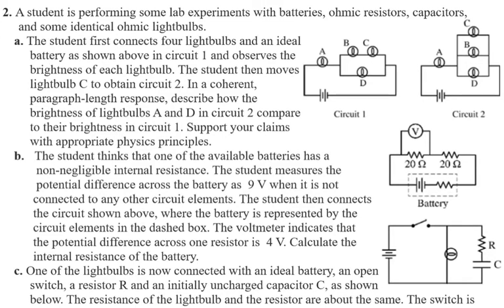This is one of the FRQ questions from College Board — the ones they give you in quizzes to study. I also have these questions in the quizzes on College Board for you to practice. The question says: a student is performing a lab experiment with batteries, ohmic resistors, capacitors, and some identical ohmic light bulbs. The student first connects four light bulbs and an ideal battery as shown in circuit one and observes the brightness of each bulb. The student then moves bulb C to obtain circuit two. In a coherent paragraph-length response, describe how the brightness of light bulbs A and D in circuit two compare to their brightness in circuit one. Support your claims with appropriate physics principles.